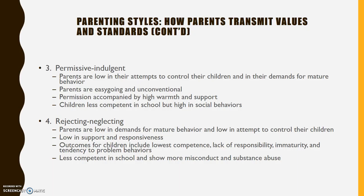Lastly, we have the rejecting and neglecting style, which is low on both continuums — low demands for mature behavior, low attempt to control, low support, and low responsiveness. Kids are probably affected the worst by this kind of parenting. They have the lowest competence, lack of responsibility, lack of maturity, and tend to have behavior problems. They're less competent in school and more likely to show problems in conduct and with substance abuse.